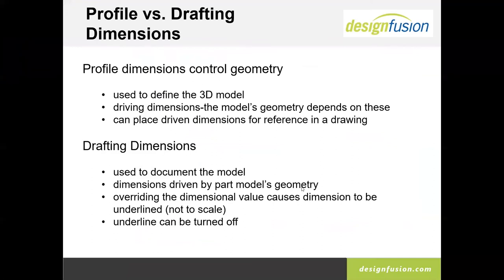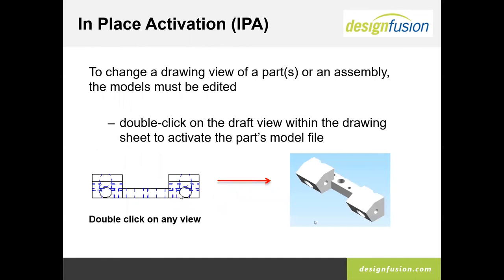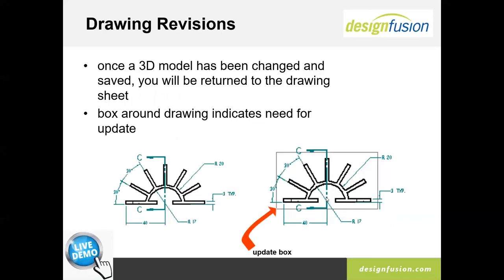I want to talk about the difference between profile versus drafting dimensions. A profile dimension or sketch dimension is usually a driving dimension — you can enter a dimension and it changes the model. Drafting dimensions are always driven dimensions; you cannot change the model from the draft. So if you notice something incorrect in the draft, you have to edit back into the model to change it. All you have to do is double-click on the view and it will open the model.